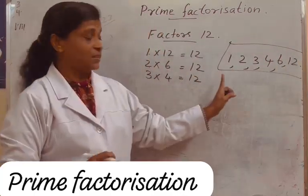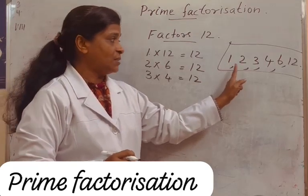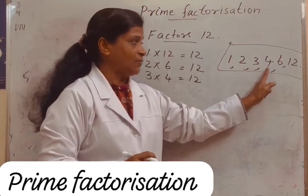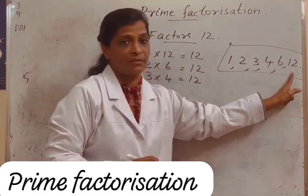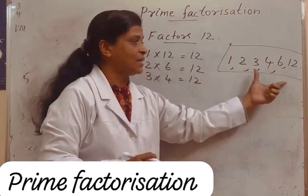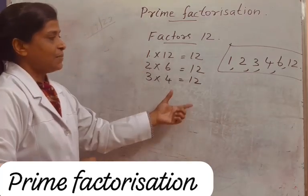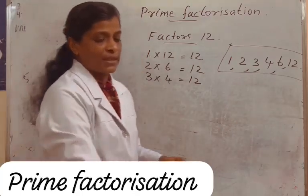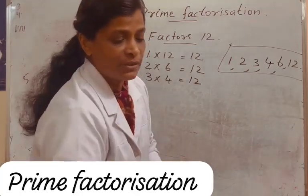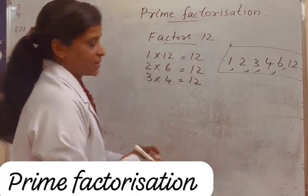How many factors? 1, 2, 3, 4, 5, 6 factors. 12 has 6 factors. But some numbers have only 2 factors.